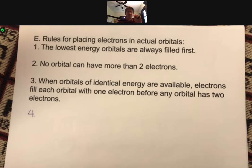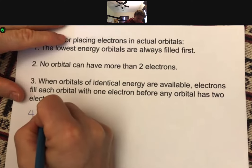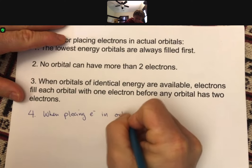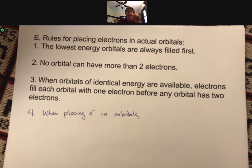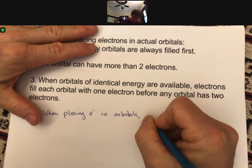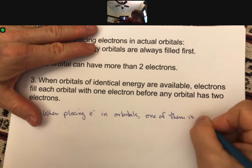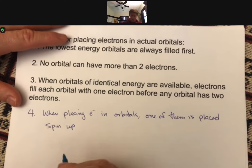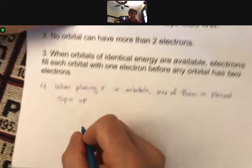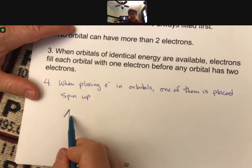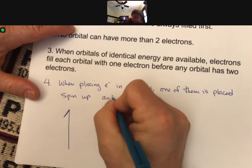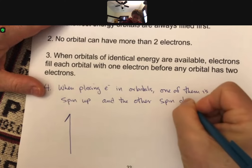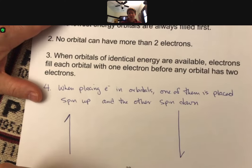And finally, when placing electrons in orbitals, one of them is placed spin up as an up arrow. It's usually drawn as a one-headed arrow. So this would be spin up, and the other spin down. And spin down typically looks like a one-headed arrow pointing down.